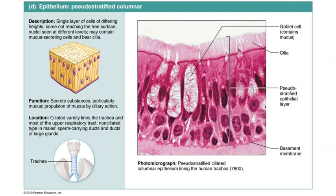Just like simple columnar epithelium, pseudostratified columnar epithelium functions to secrete substances — in particular, it secretes mucus. The cilia on its apical surface help to move and propel the mucus, as well as any dust or dirt that the mucus traps, along the surface of that tissue. Pseudostratified columnar epithelium without cilia is found in the sperm-carrying ducts of the male reproductive system.